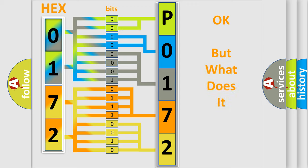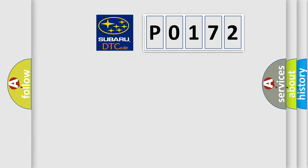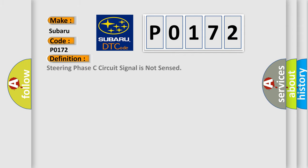We now know in what way the diagnostic tool translates the received information into a more comprehensible format. The number itself does not make sense to us if we cannot assign information about what it actually expresses. So, what does the diagnostic trouble code P0172 interpret specifically for Subaru car manufacturers? The basic definition is: Steering phase C circuit signal is not sensed.